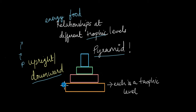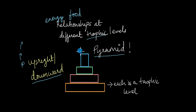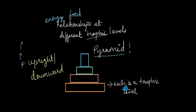Upright is where the base is broad and the top is narrow, or downward where the base is narrow and the top is broad. Before we move on and talk about the different types of ecological pyramids, let's take a refresher on what each trophic level is.